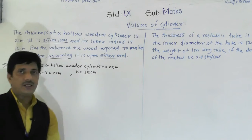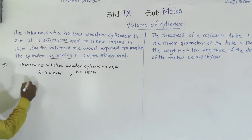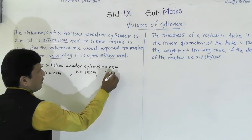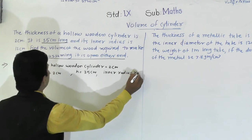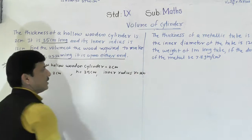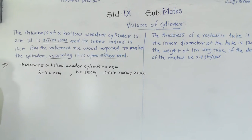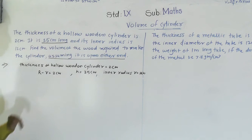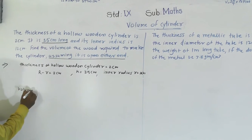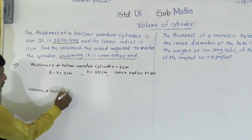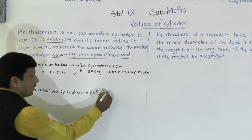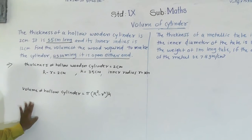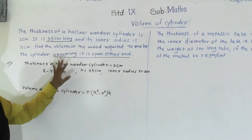The inner radius is given as 12 cm, so small r = 12 cm. We have to find the volume of the wood required to make the cylinder. The formula for the volume of a hollow cylinder is: Volume = π(R² - r²) × h. We need to check whether all values are given or if some are unknown.